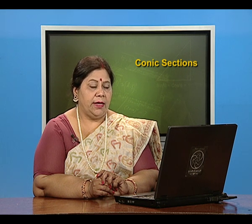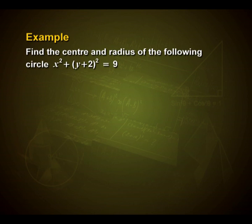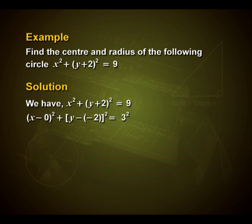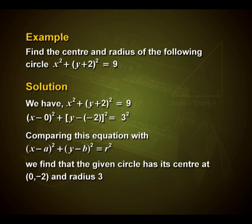Now let us look into Type 2 examples, which are based on finding the center and radius of a circle. Find the center and radius of the circle x² + (y + 2)² = 9. This can be expressed as (x - 0)² + (y - (-2))² = 3². Comparing with the standard equation (x - a)² + (y - b)² = r², the given circle has its center at (0, -2) and radius 3.